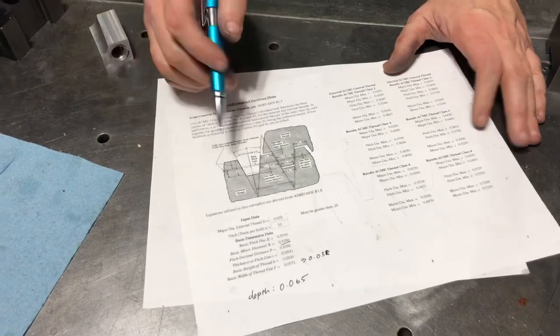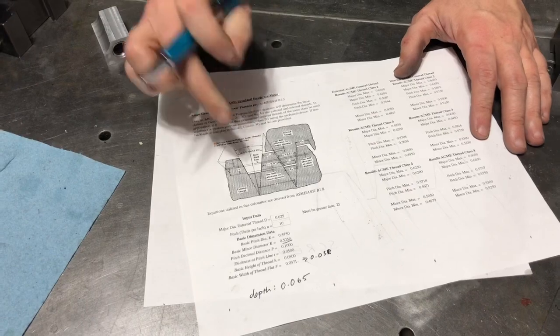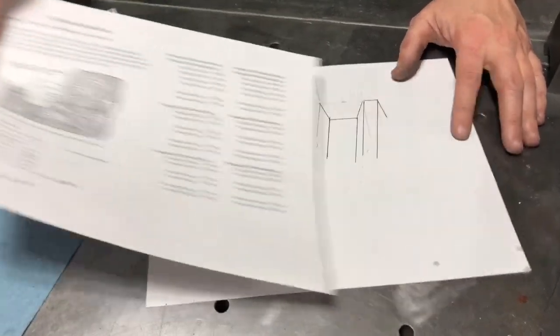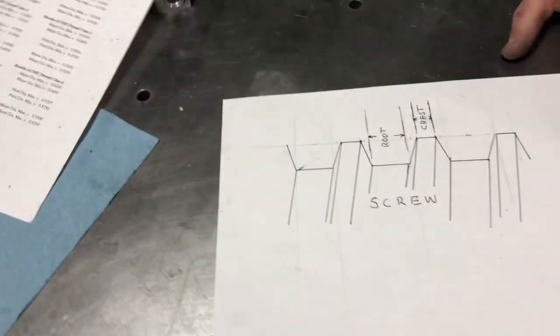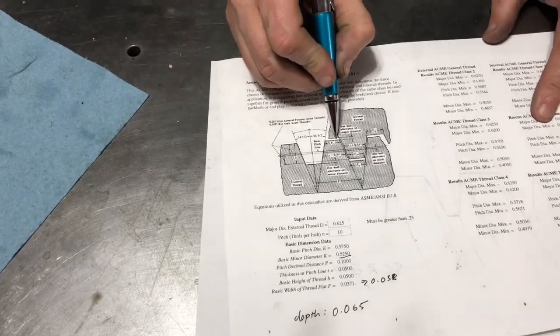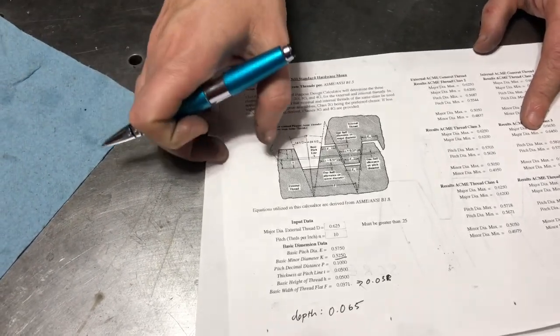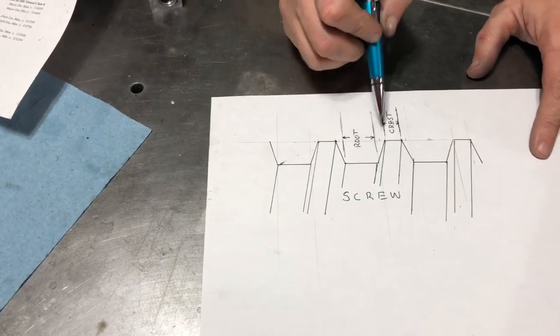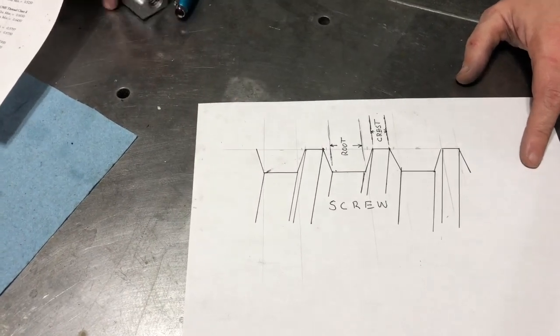However, the issue with a worn screw is it's not going to look exactly like a perfect screw. Rather, a worn screw wears unevenly. So in an ideal Acme thread, we have the crest width and the root width. Those are going to be identical because it's a brand new nut. However, in a worn screw, the crest is going to be narrower than the root. Why is that?